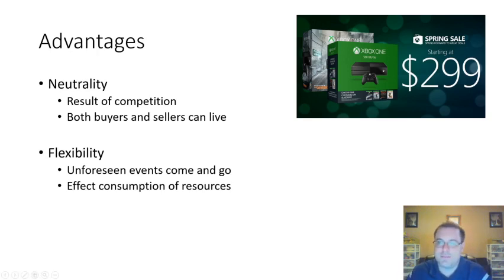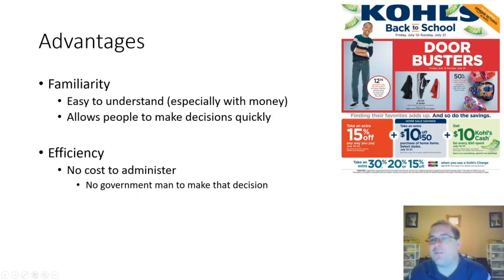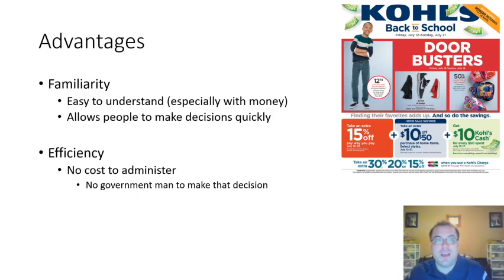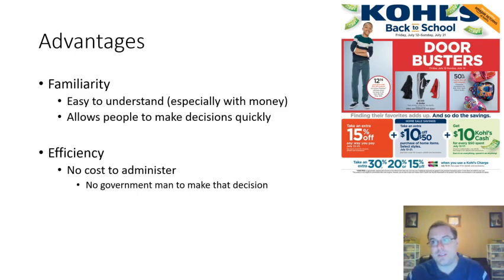Prices are also familiar — they're easy to understand, especially when you have money. For example, Kohl's: shoes $49.99 and under. We can understand that — 50 bucks for a pair of shoes. Backpacks 50% off — that's easy to understand. This allows people to make decisions very quickly. We can look and say okay, shoes are 50 bucks — that's worth it or it's not worth it. We're able to make snap decisions just based on looking at the price.